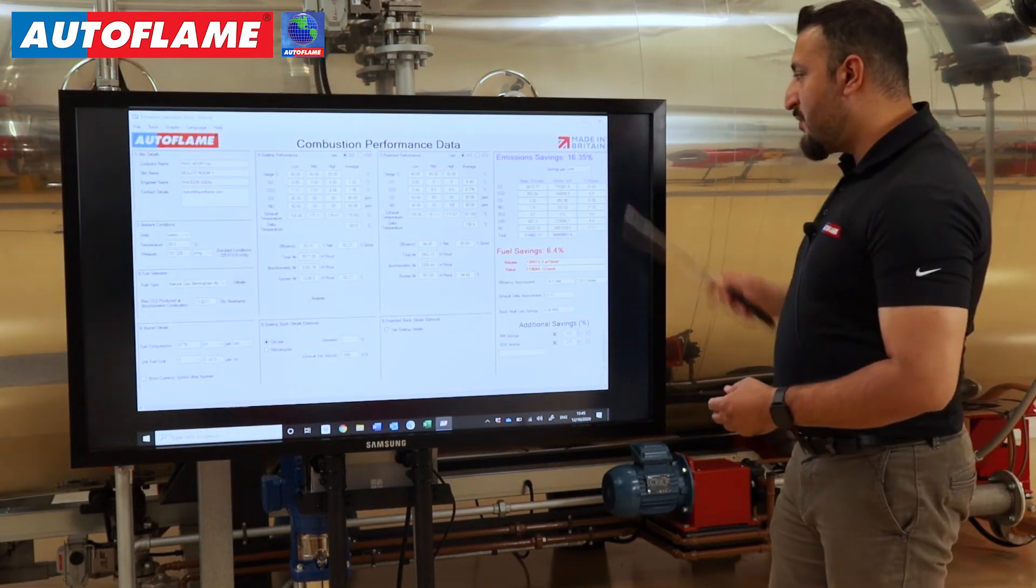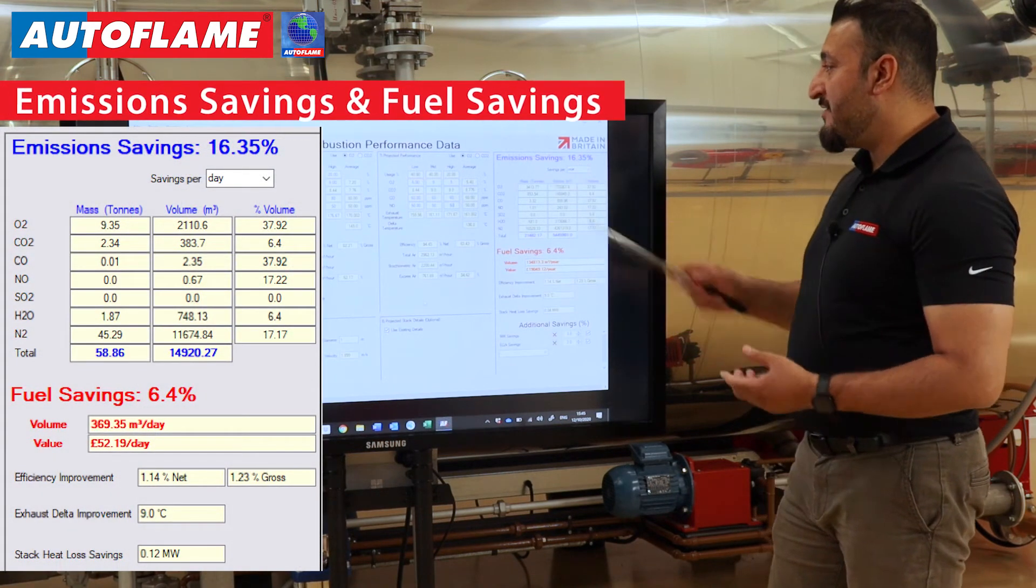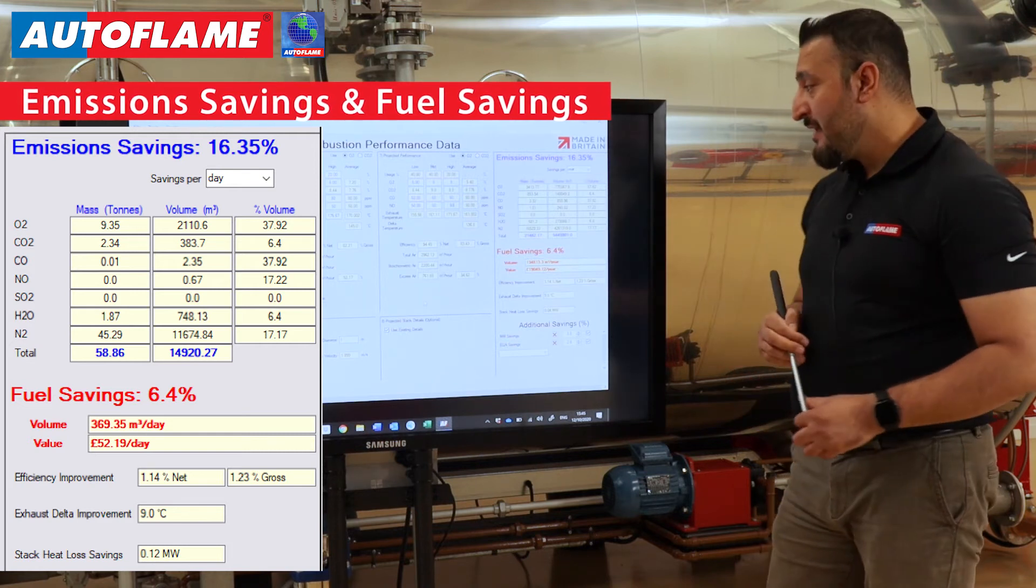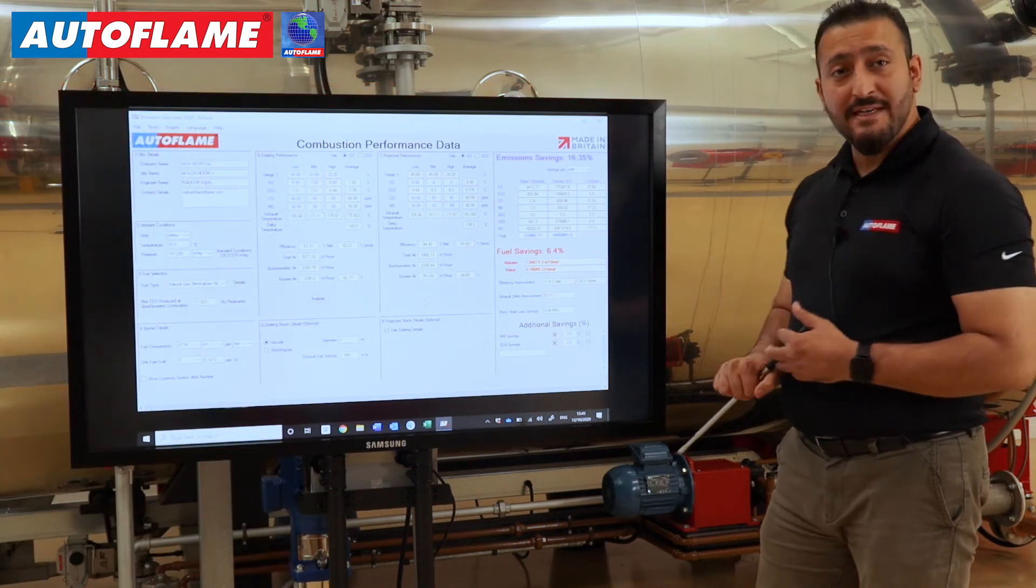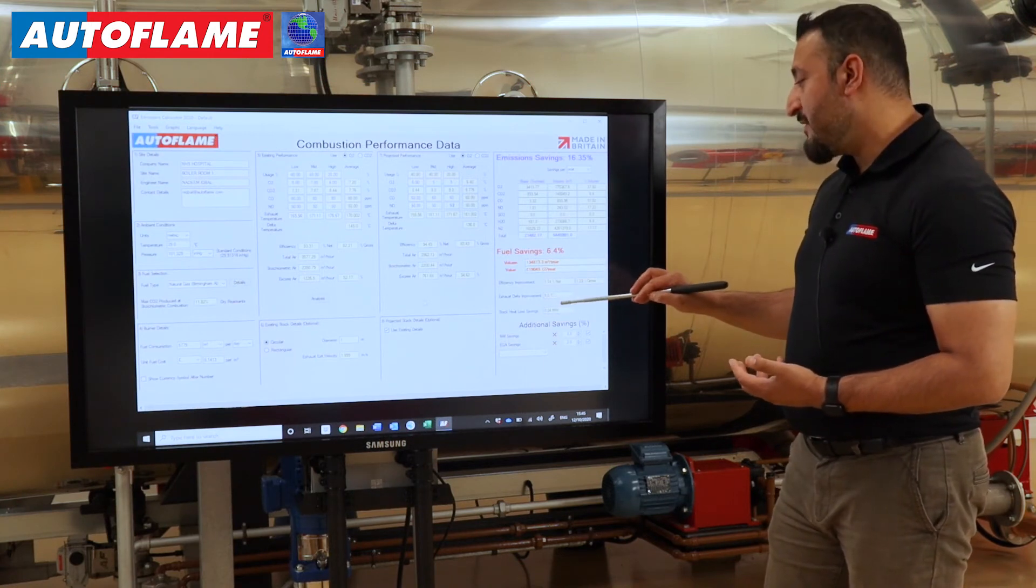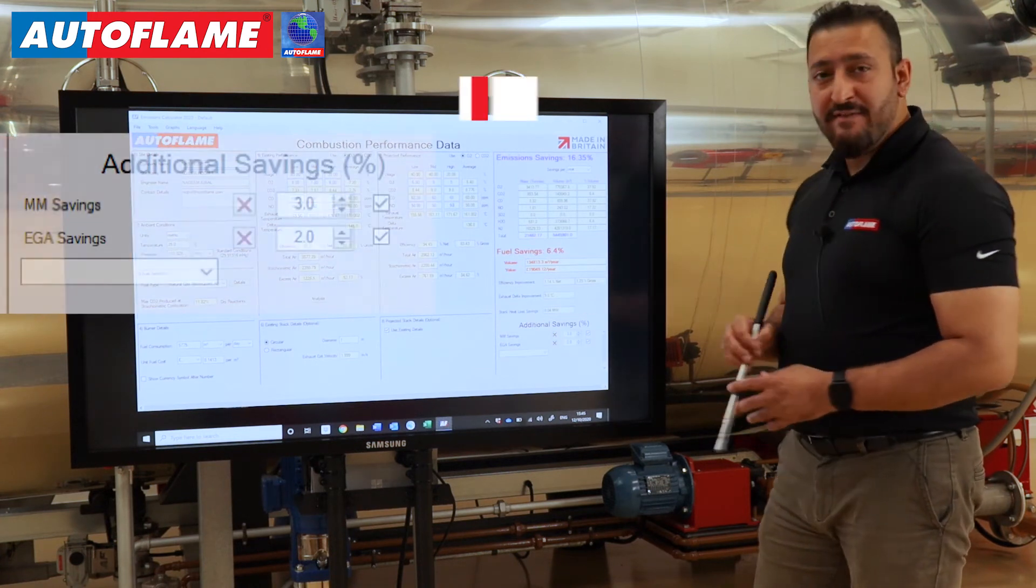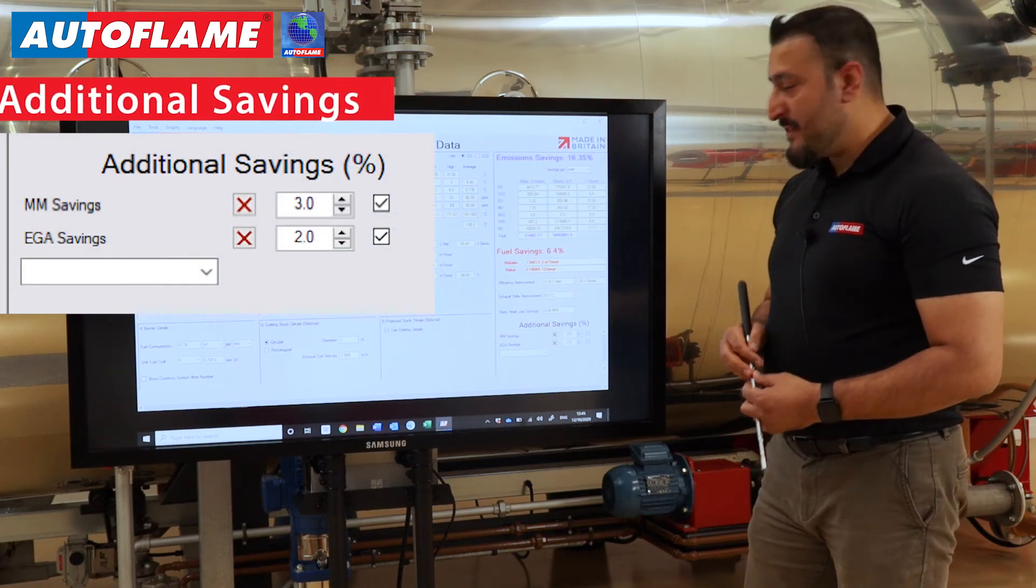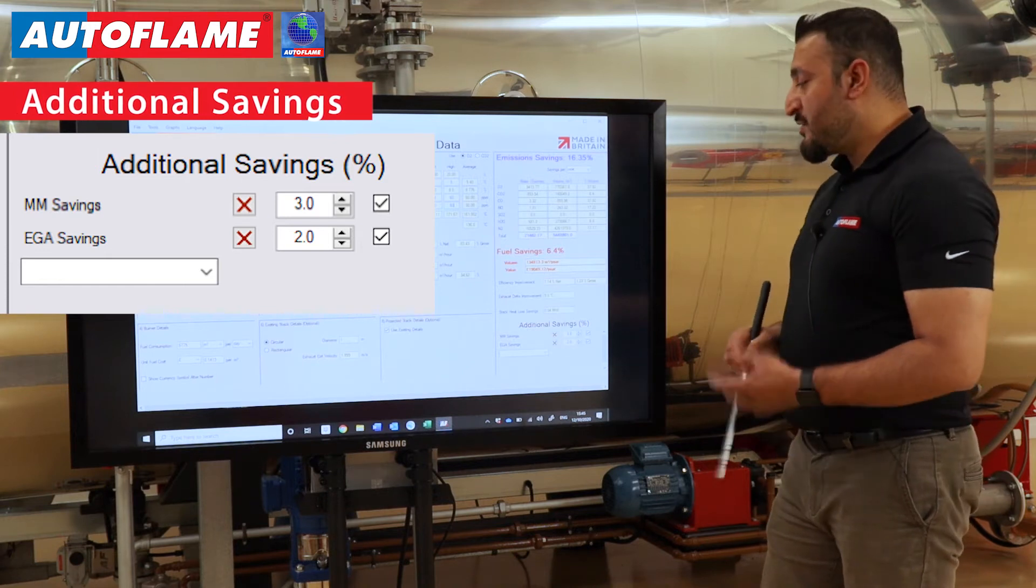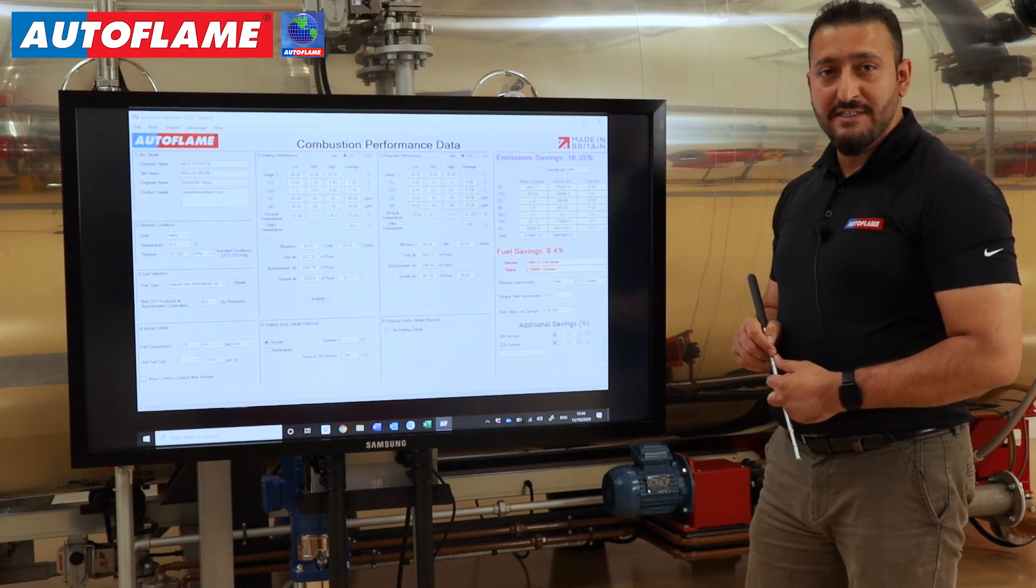At section 8, we are keeping the same stack dimensions because we're not changing that. Finally, on the right-hand side, we can see our savings report. In this particular case, we can see emission savings of 16.35%, which will give us 6.4% fuel savings and overall efficiency improvement of 0.04 megawatts of this particular boiler. We can also add further savings depending on what equipment we're using. In this particular case, we're only adding the MM and the EGA. Exhaust gas analyzer adds further one to two percent of savings with the help of three-parameter trim.